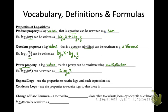We're going to use these properties to expand logs — this is when we use the properties to rewrite logarithms until each expression is a single number or variable. When we condense logs, we use the properties to rewrite logarithms so that there is just one log expression. We'll also recall the change of base formula from Concept 25, which is a method to rewrite a logarithm so it's easy to evaluate on any scientific calculator. Log base b of m can be written as log of m divided by log of b.